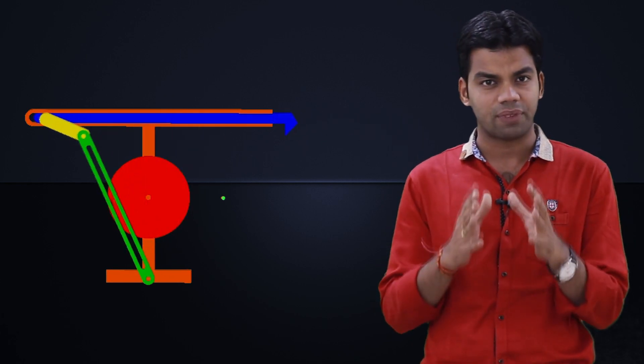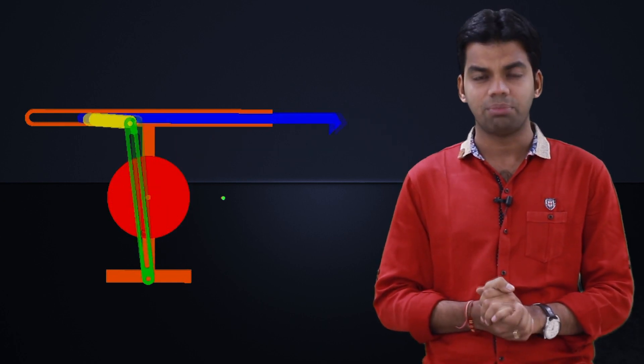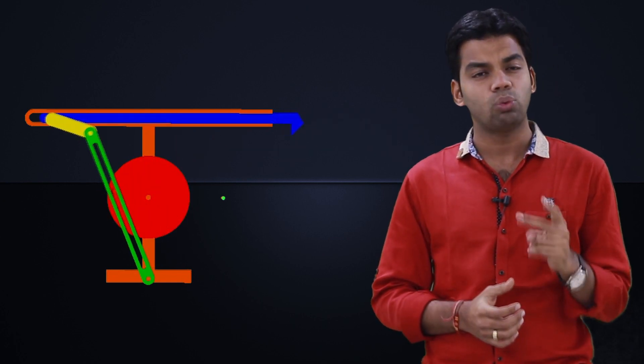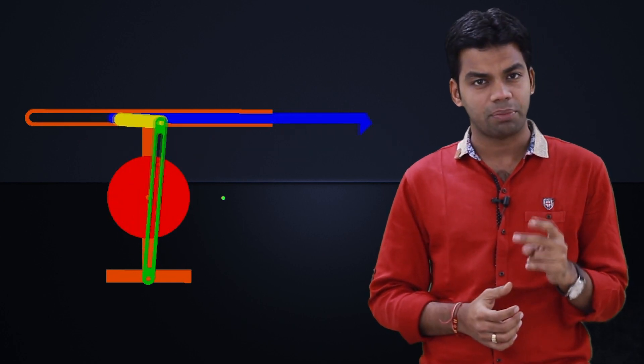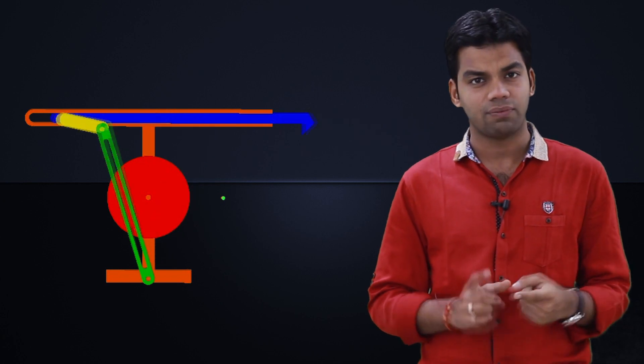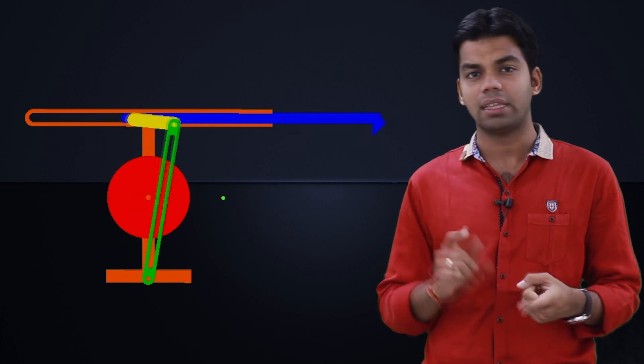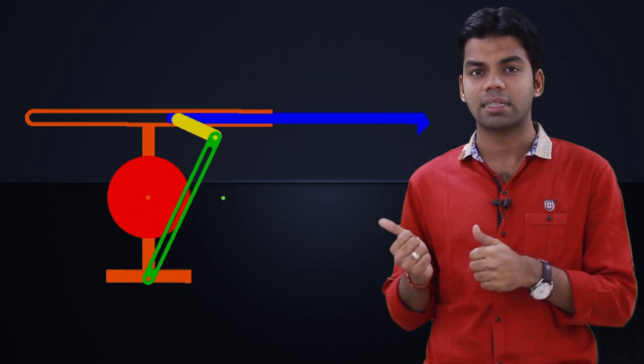If we fix the connecting rod of the slider crank mechanism, we will get two types of mechanisms: first is the oscillating cylinder engine, and second is this crank and slotted lever mechanism.